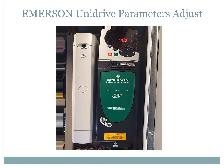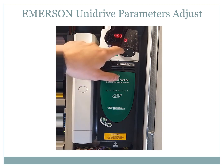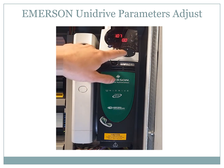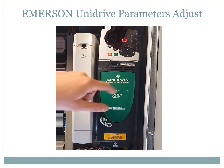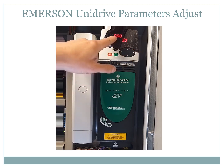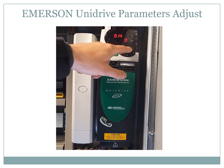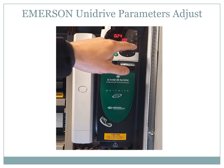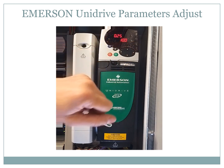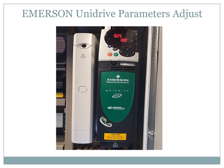Now let's say that we want to change a parameter related to the low speed of the lift. We will go to chapter 0, parameter 25. This is the low speed of the lift.